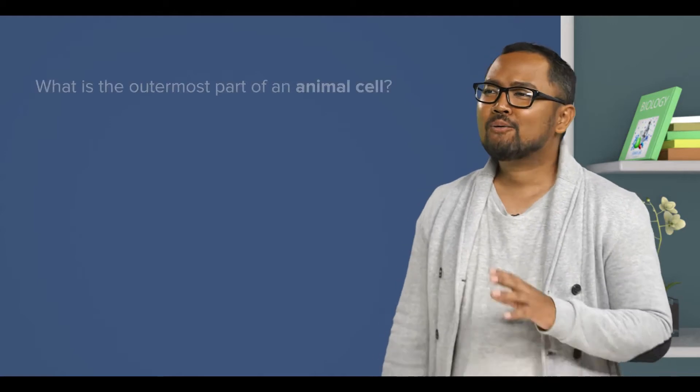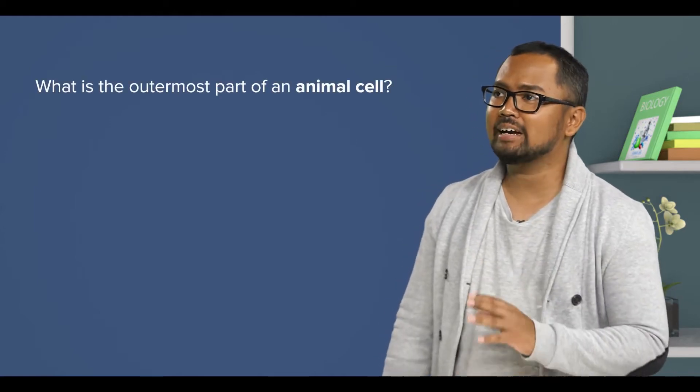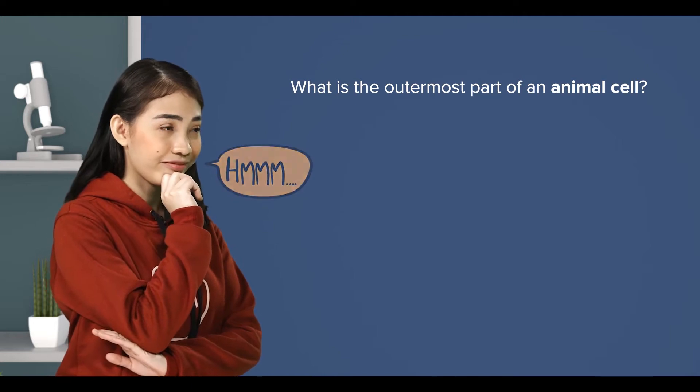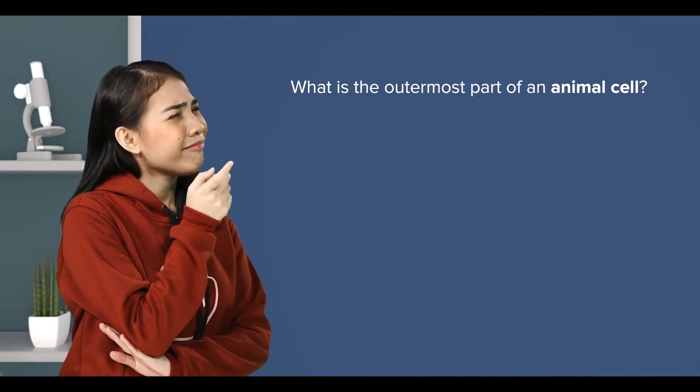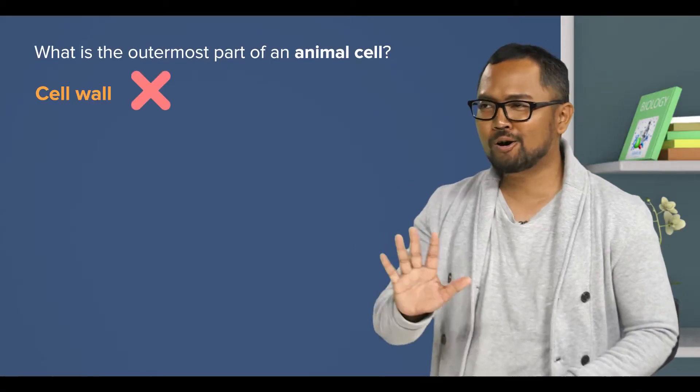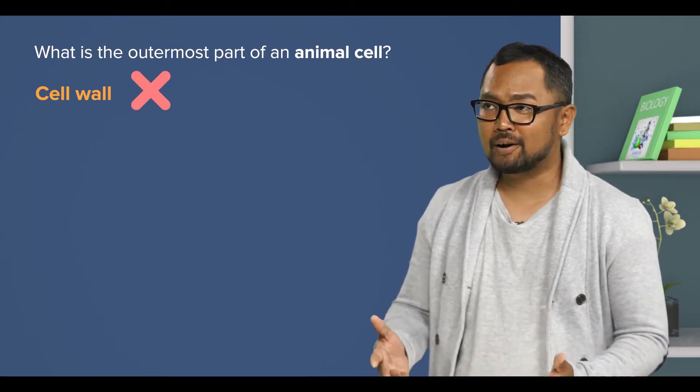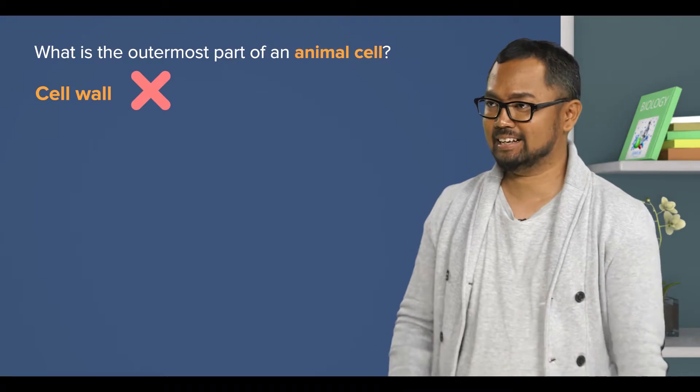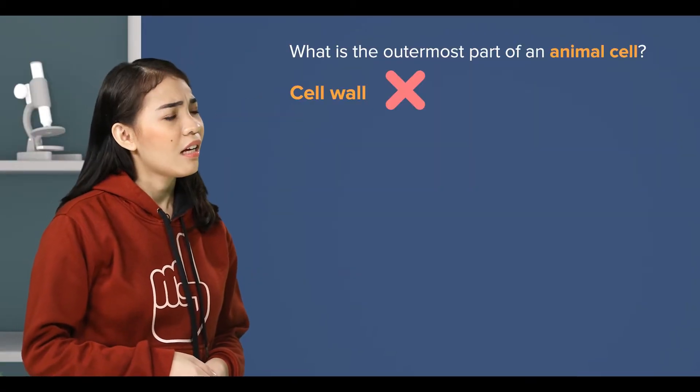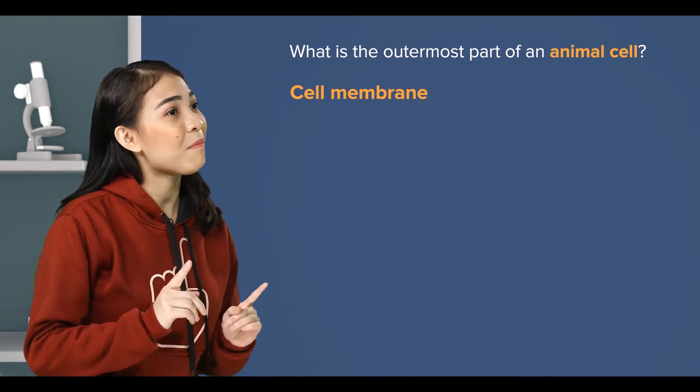Sounds good. Let's start with a question. What is the outermost part of an animal cell? A cell wall? No. Once again, what's the outermost part of an animal cell? Oh, animal cell. The cell membrane.